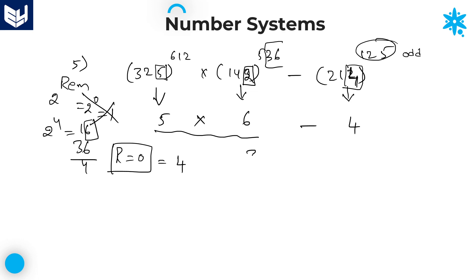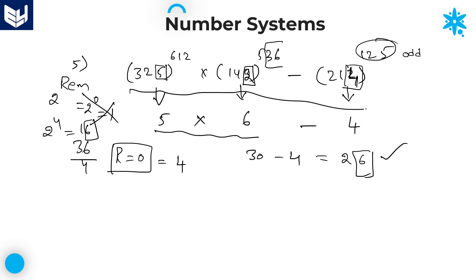Now multiply the units digits: 5 × 6 = 30. Then subtract 4 (from the second category term): 30 − 4 = 26. Therefore the required units digit is 6. Likewise, you can use any kind of mathematical operation for any kind of category. All these problems belong to units place digit.